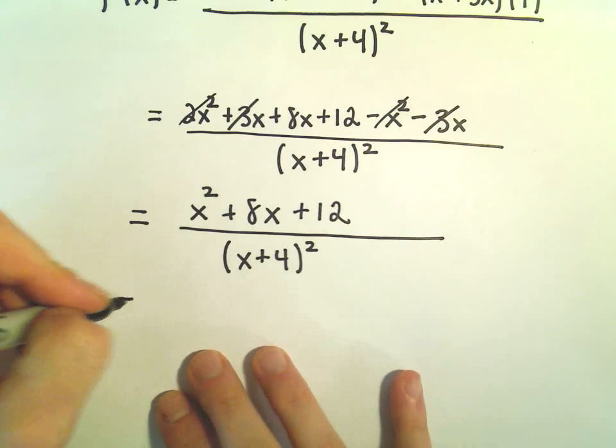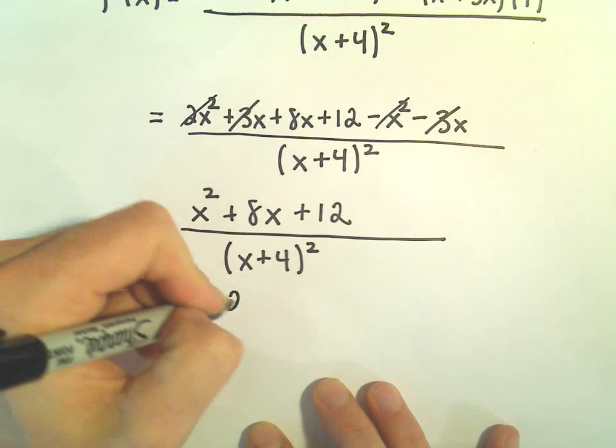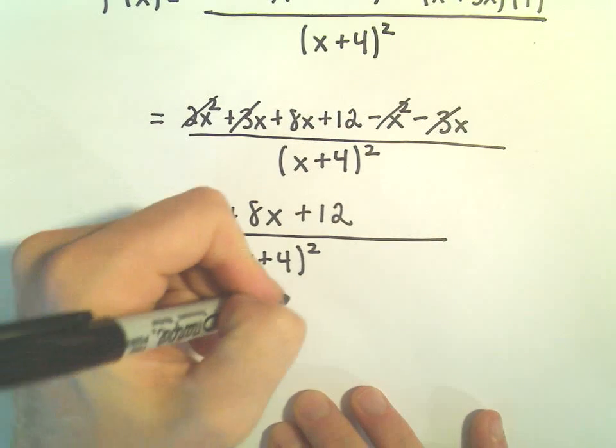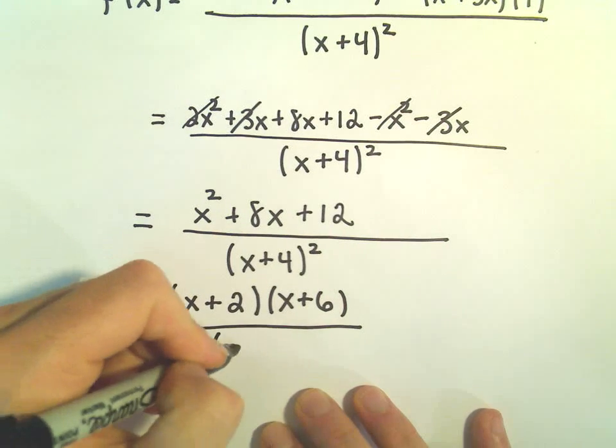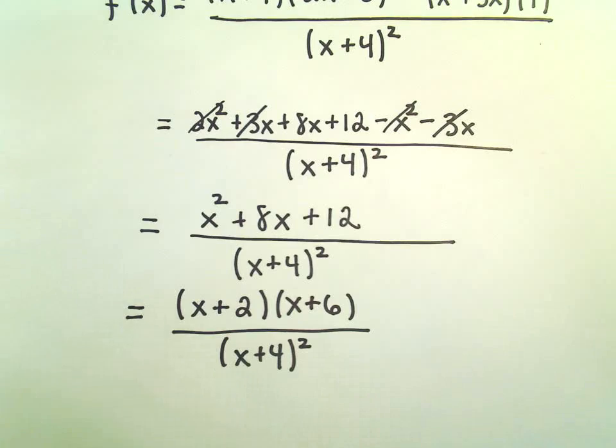I could even think, does this factor? The numerator even does factor. I mean, you could leave it like this. We could even factor this as x plus... Actually, I take that back. Okay, yes, x plus 2 times x plus 6 all over x plus 4 squared. And that's our derivative.